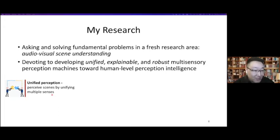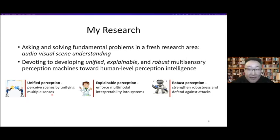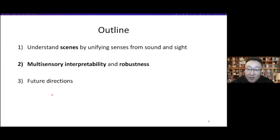For unified perception, we hope to perceive things by unifying multi-sensory inputs. For expandable perception, we want to enforce multi-modal interpretability into systems. For robust perception, we want to strengthen robustness and defend against attacks. These three aspects are distinct yet interconnected, and all are essential for designing powerful and trustworthy audio-visual understanding systems. The talk outline covers: learning to understand scenes from sound and sight, multi-sensory interpretability and robustness, and future research directions.